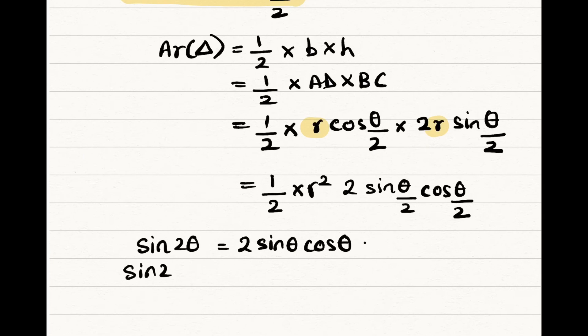So sine 2 theta by 2 will be equal to 2 sine theta by 2 cos theta by 2. We just have to replace this value in equation over here.